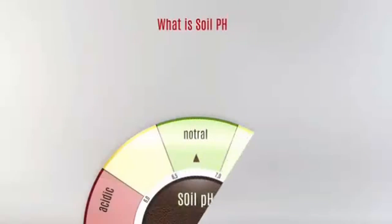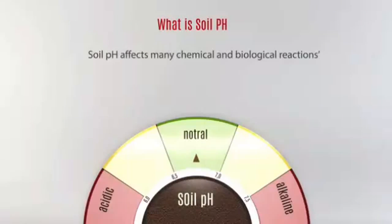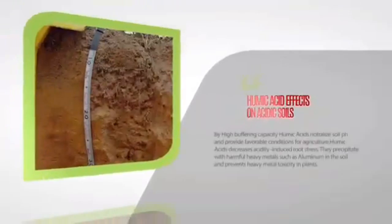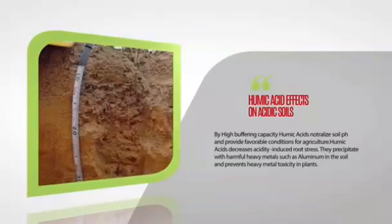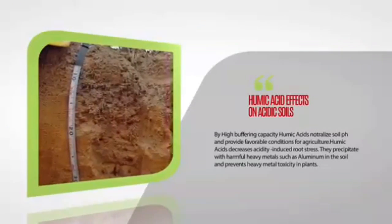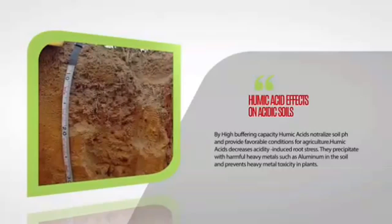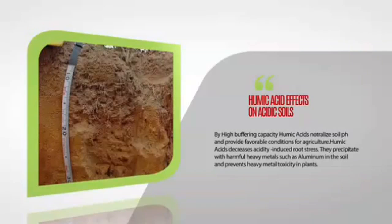Soil pH affects many chemical and biological reactions. By high buffering capacity, humic acids neutralize soil pH and provide favorable conditions for agriculture. Humic acid decreases acidity-induced root stress and precipitates with harmful heavy metals such as aluminum in the soil, preventing heavy metal toxicity in plants.